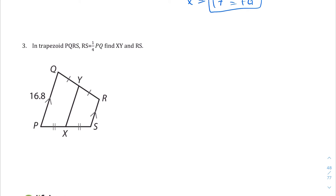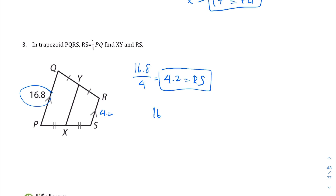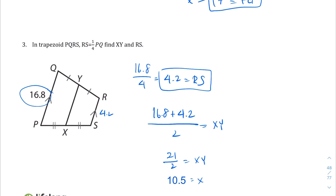RS is one quarter the length of PQ. Find x, y, and RS. We already know PQ is 16.8, so divide by 4: RS = 4.2. Now to find XY, we add the two bases: 16.8 plus 4.2 equals 21, then divide by 2. So XY = 21 divided by 2 = 10.5.